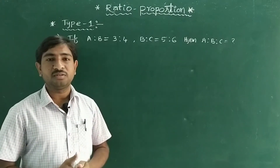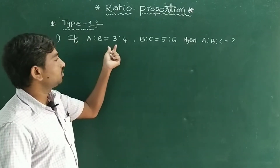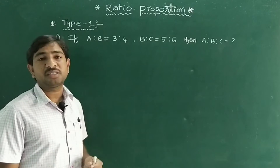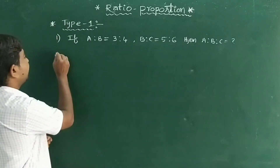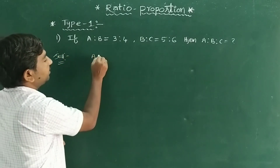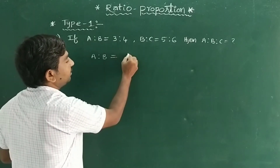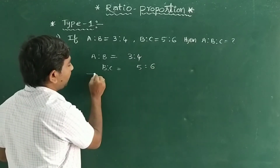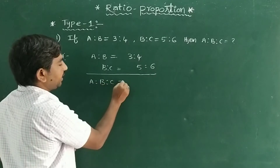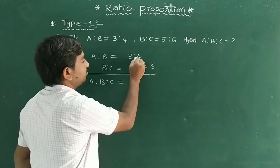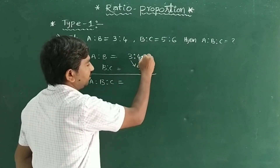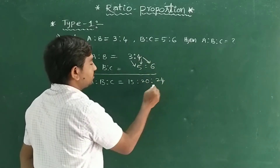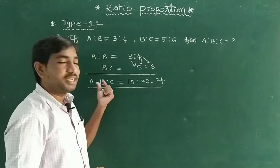Model one: if A is to B equals 3 is to 4, and B is to C equals 5 is to 6, then A is to B is to C equals what? The general method many coaching centers use is to multiply: 3×5=15, 4×5=20, 4×6=24. So A:B:C = 15:20:24.